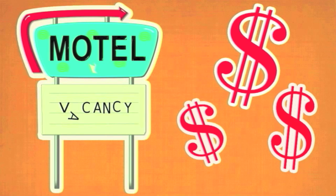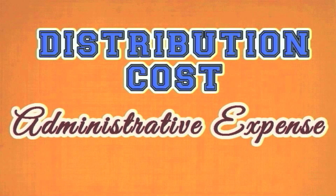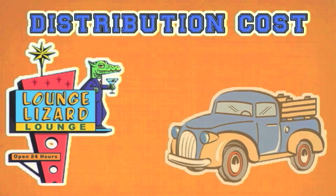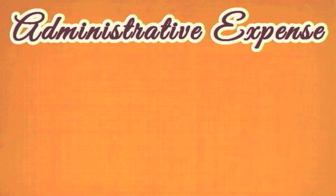This would mean that depreciation is an expense. The type of expense, however, is determined by the asset itself. Depreciation can either be a distribution cost or an administrative expense. Distribution costs are expenses dealing with things like promotion, delivery and storage of a business service and inventory. And administrative expenses are expenses incurred from everyday operations of the business.